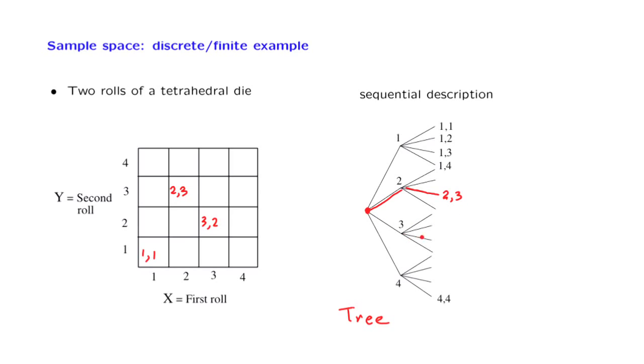Notice that in this tree, we once more have a distinction. The outcome 2 followed by a 3 is different from the outcome 3 followed by a 2, which would correspond to this particular place in the diagram. In both cases, we have 16 possible outcomes. 4 times 4 makes 16. And similarly, if you count here, the number of leaves is equal to 16.